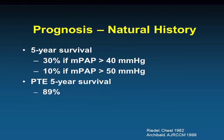CTEPH is a pretty deadly disease when untreated. If mean pulmonary artery pressure is above 40, five-year survival is only 30%; if above 50, it drops to 10%. However, if patients are successfully operated, five-year survival is approximately 90% — a huge difference. By comparison, five-year survival for lung transplantation, to which these patients are often referred, is only about 50%. Successful surgery makes an enormous difference in this patient's life.